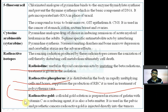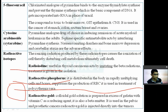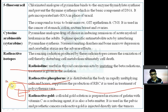Polycythemia means an abnormal increase in RBCs, whereas anemia means a decrease in RBCs. Polycythemia vera is a disease characterized by abnormal increase in RBCs. Radioactive phosphorus is used in the treatment of polycythemia vera.